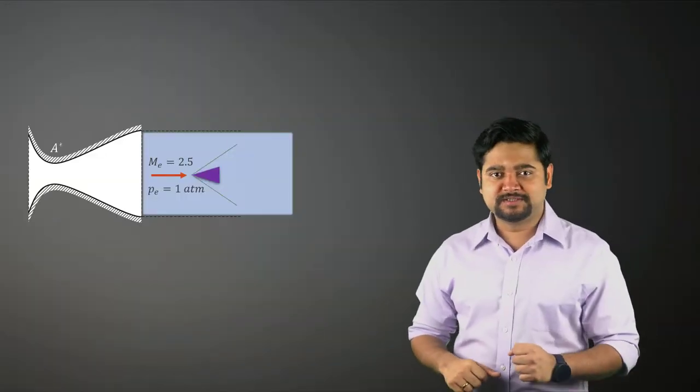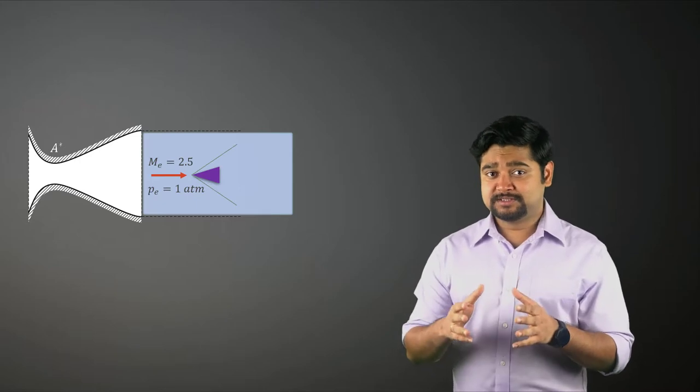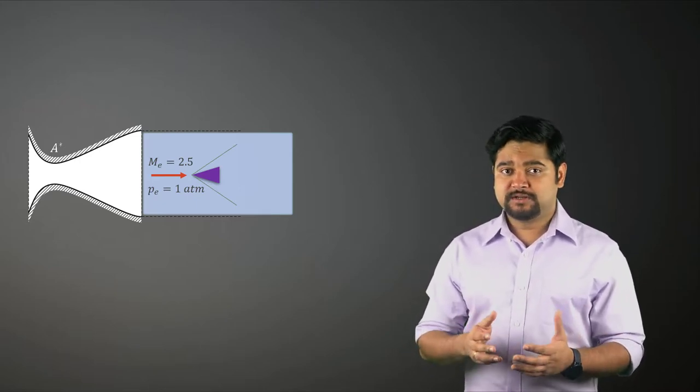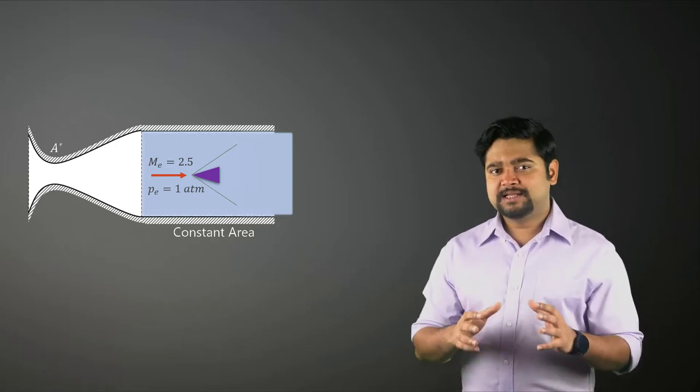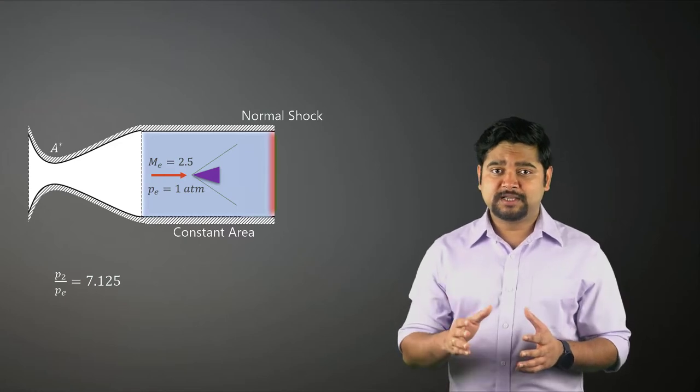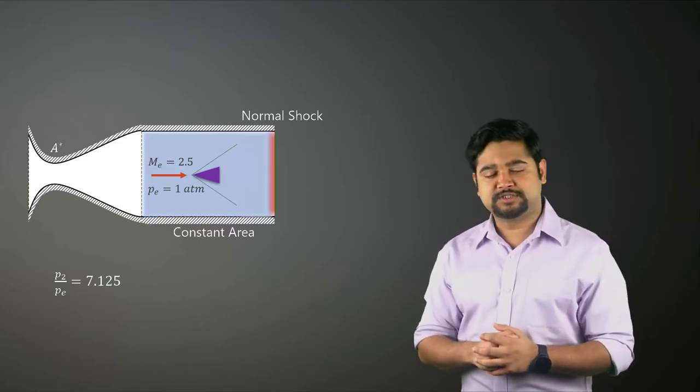Let us modify our setup so that the nozzle exits the flow into a constant area section instead of a free jet directly into the lab. And let's say this constant area section contains a normal shock wave standing at the end of the constant area section.